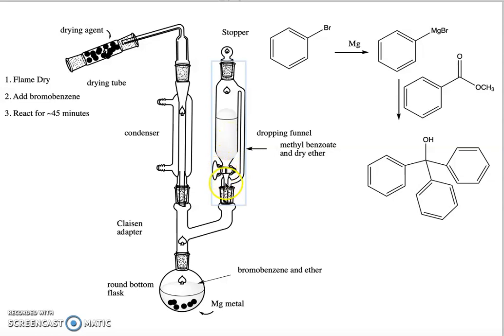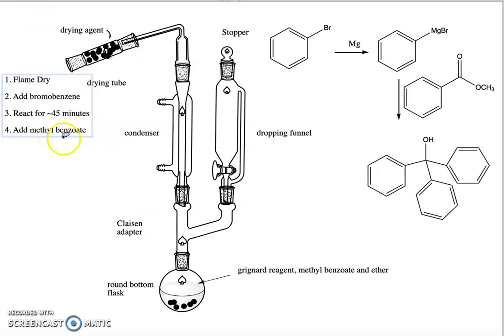Now the methyl benzoate and the ether are in my dropping funnel. I'm going to do as I did before—I'm going to open the stopcock and let it drip slowly into my flask containing my pre-made Grignard reagent.